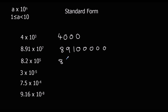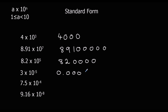Times 8.2 once to get to 82, then 4 more times. We're dividing 3 by 10 five times, so we're going to have 4 zeros and then the 3: 1, 2, 3, 4, 5.